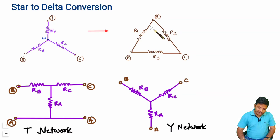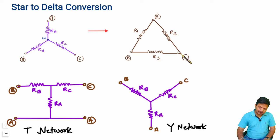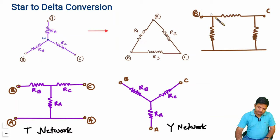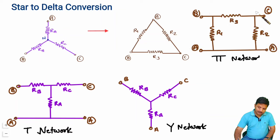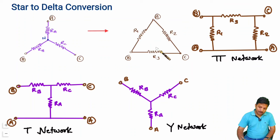The delta network is connected in the form of a triangle, which is why it is referred to as a delta network. This network is also referred to as a pi network, because if terminals B and C are placed at the base and terminal A is stretched out, it appears like the Greek letter pi.